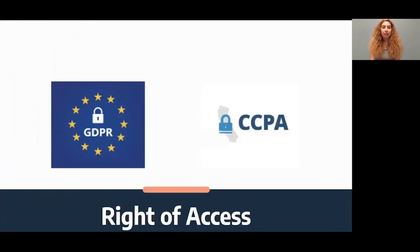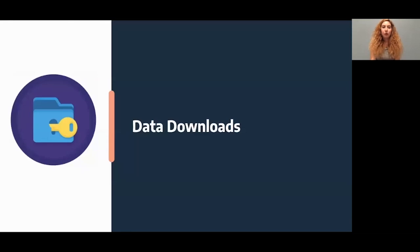The right of access is a key privacy principle requiring that organizations provide a data subject a copy of the data it holds about them upon request. In recent years, the General Data Protection Regulation, GDPR, and the California Consumer Privacy Act, CCPA, have strengthened the right of access. When users invoke their right of access, companies typically provide a downloadable archive, which we call data downloads.